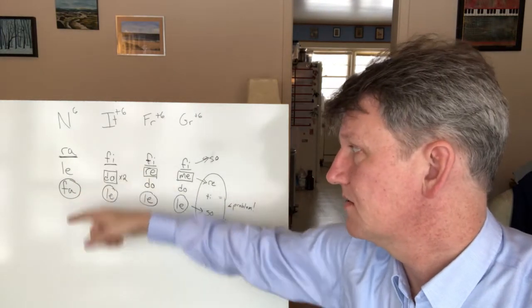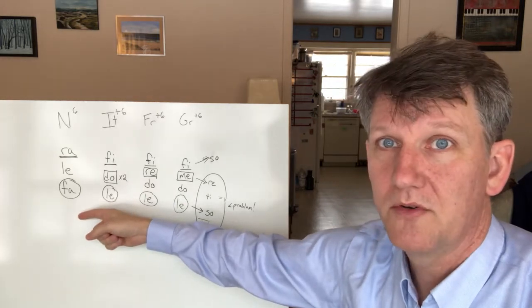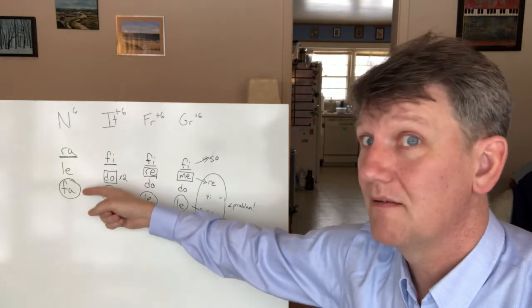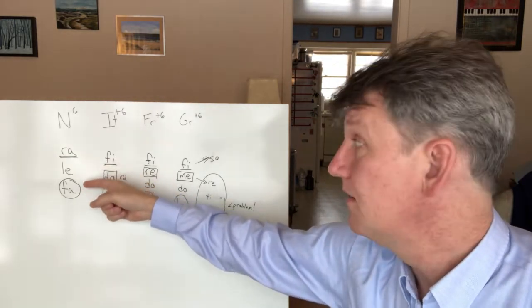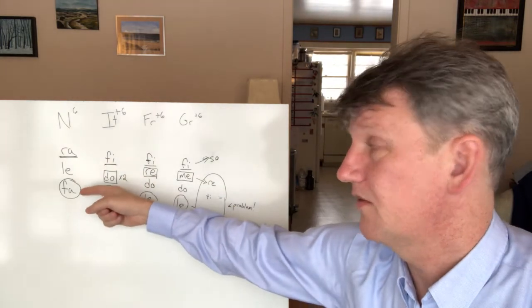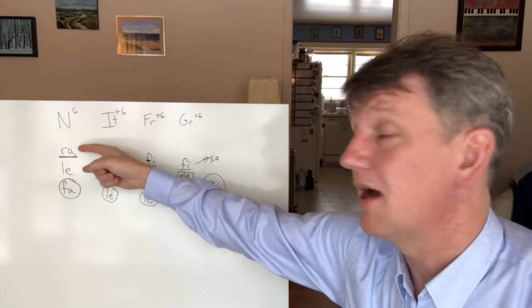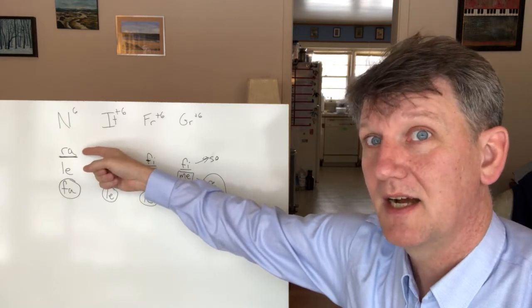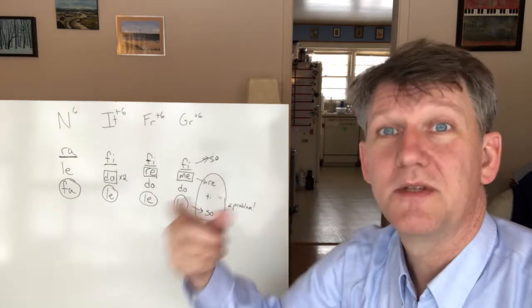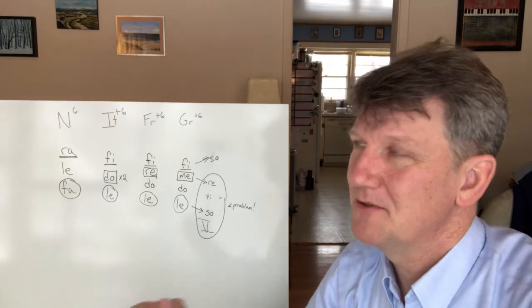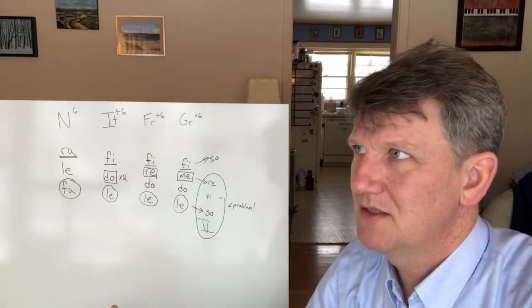The note that's going to stick out to you is the Ra. So the Neapolitan chord is, if you spelled it from the root, it would be Ra-Fa-Le, but since it's in first inversion, we'll hear it Fa-Le-Ra. That Ra is the note that's going to stick out to your ears. And one of the reasons why it will stick out to your ears is that if you're in, say, Do-Me-So-Me-Do...